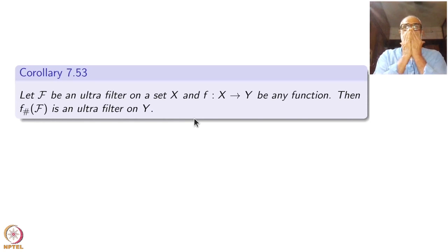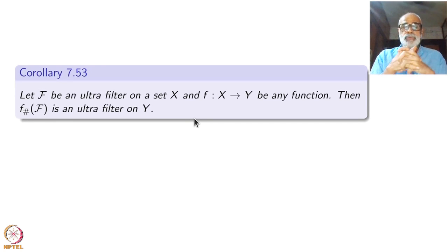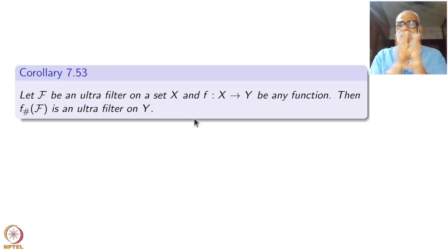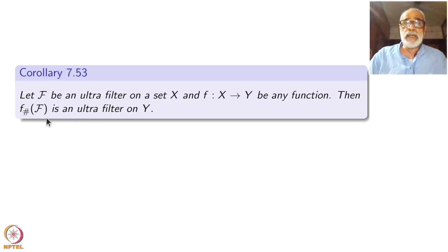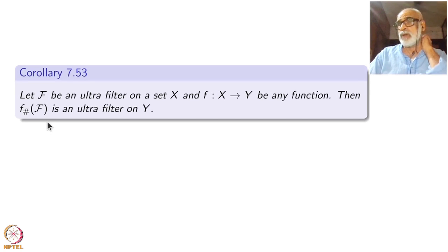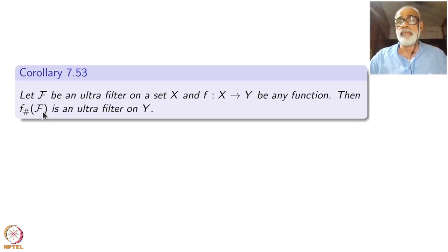As a corollary, we prove something very important and useful. Take any ultrafilter F on X and any function f from X to Y. Then the pushforward filter f̂(F) is an ultrafilter on Y. Ultrafilters behave very nicely under functions with no conditions on f. Recall that f̂(F) is the unique filter containing f(A) for all A in F — it is generated by taking all supersets of f(A) where A is in F.